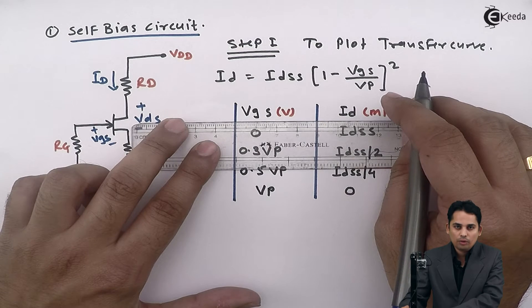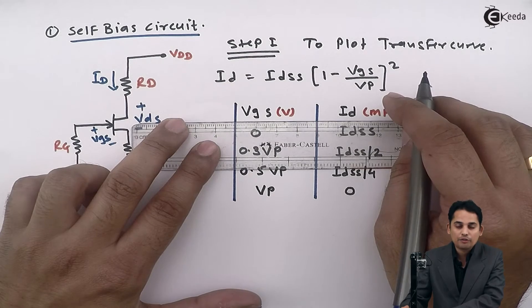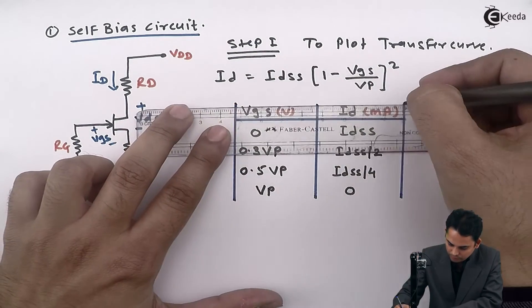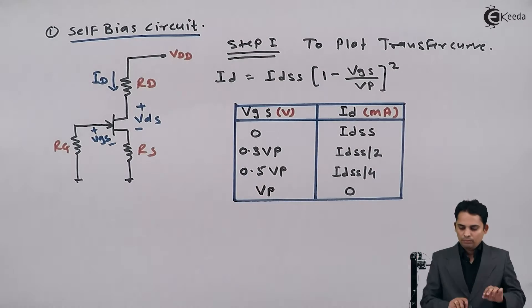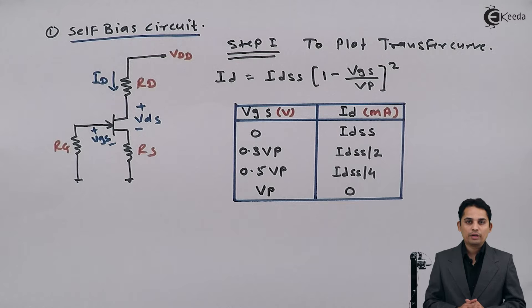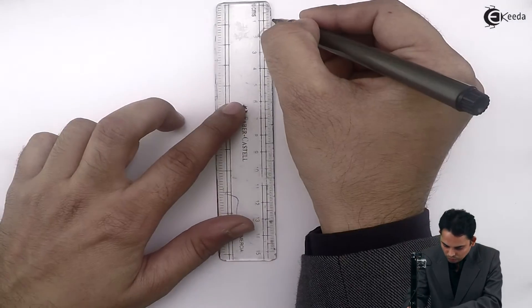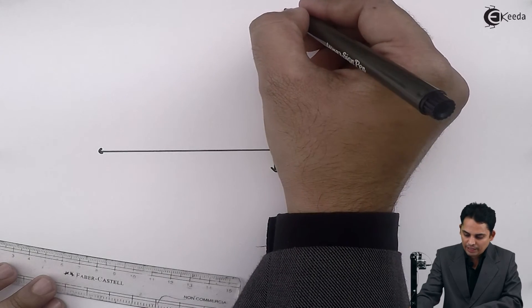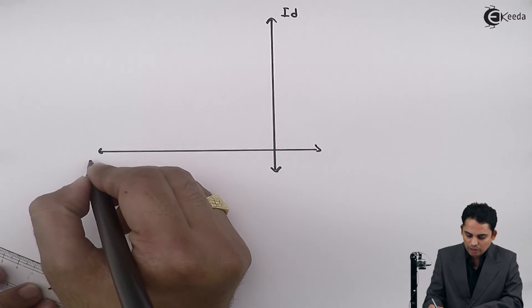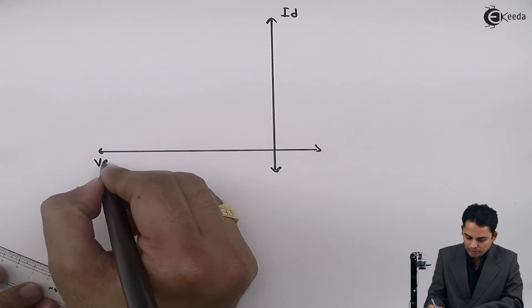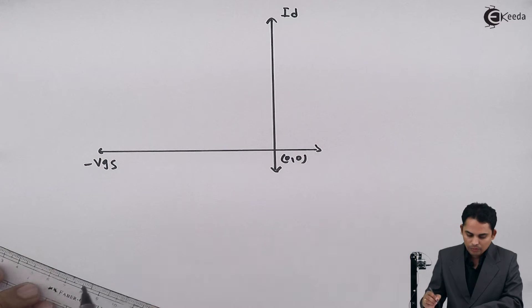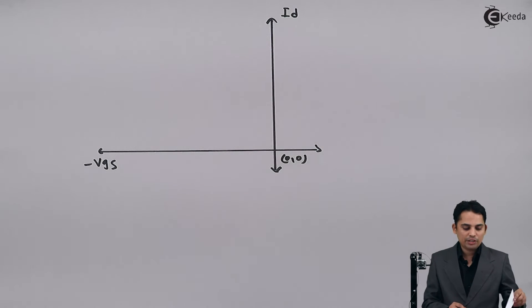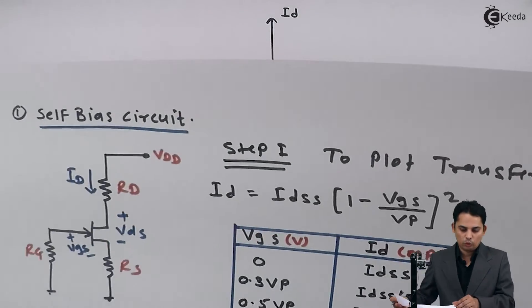We can draw a curve passing through these 4 points; that will be called the transfer characteristics. Transfer characteristics is a graph of drain current Id versus input voltage Vgs. Let us plot those 4 points.